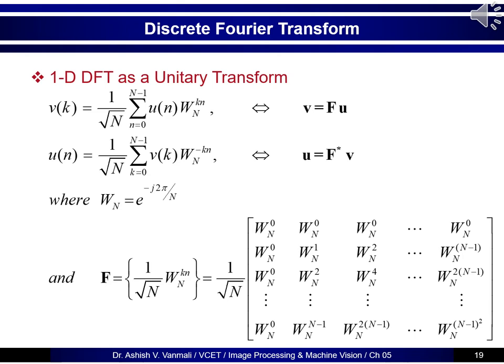If we expand the transformation matrix for N, it will be 1 upon root N times: the first row will be W_N raised to 0 repeated up to W_N raised to 0; the second row will be W_N raised to 1, W_N raised to 2, up to W_N raised to N minus 1; the third row will be W_N raised to 0, W_N raised to 2, W_N raised to 4, up to W_N raised to 2 times N minus 1; and the last row will be W_N raised to 0, W_N raised to N minus 1, up to W_N raised to N minus 1 squared.